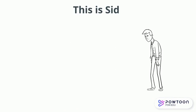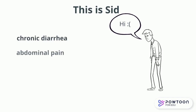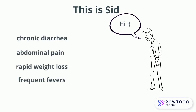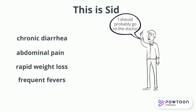This is Sid, a 26-year-old man who over the past few weeks has been experiencing chronic diarrhea, abdominal pain, rapid weight loss, and frequent fevers. Because of the psychological and physical distress that these symptoms are causing him, he decides to visit his family doctor.